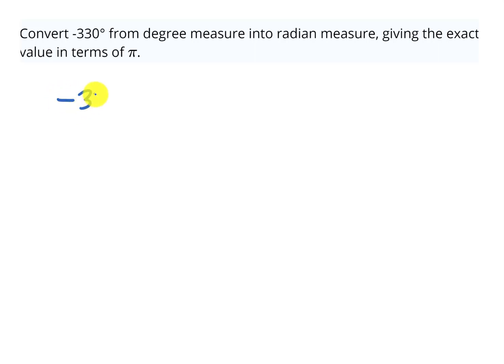So we're going to start with the negative 330 degrees, and we're going to use a conversion fraction. We need radians and degrees that are equal to each other, and that would be, we're going to use pi and 180.